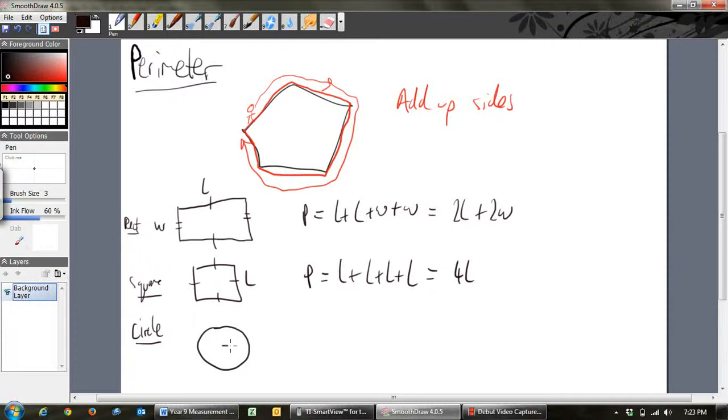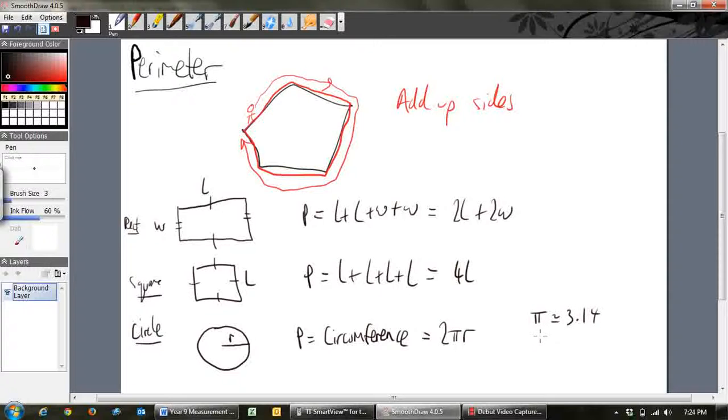Probably the most recent one that you've learned is a circle. So if you've got a circle with a radius R, the perimeter which we call the circumference - so the perimeter of a circle is also called the circumference - and that's equal to 2πr. 2 times pi times r. And again pi is roughly equal to 3.14, but to get better accuracy use the calculator button that has pi on it.